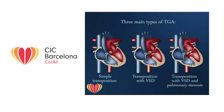There are three main types of transposition of the great arteries. Simple transposition with intact interventricular septum is the most common type, occurring in 60% of cases. Transposition with ventricular septal defect occurs in 20% of cases. Transposition with ventricular septal defect and pulmonary stenosis occurs in 15% of cases.